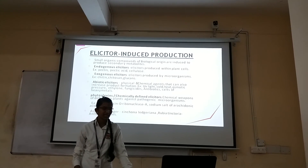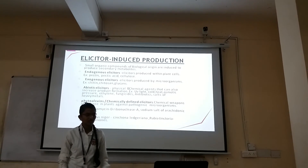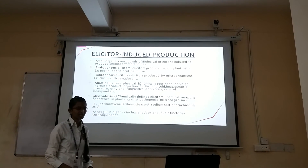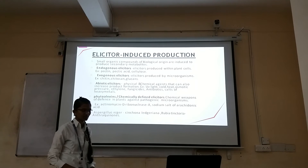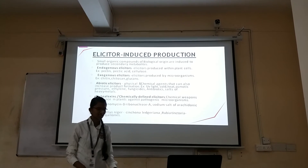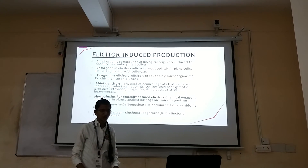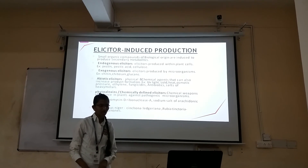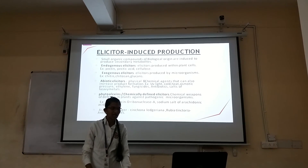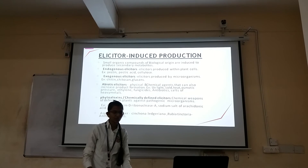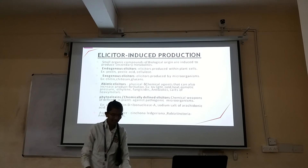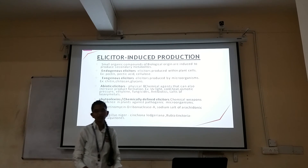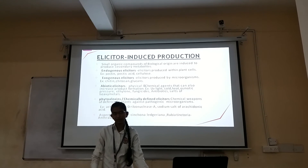Phytoalexins are chemically defined elicitors — the chemical weapons of defense in plants against pathogenic microorganisms. Examples include actinomycin D, ribonuclease, and arachidonic acid. For example, Aspergillus niger in Cinchona ledgeriana: the elicitor-treated organism produces anthraquinones as secondary metabolites.